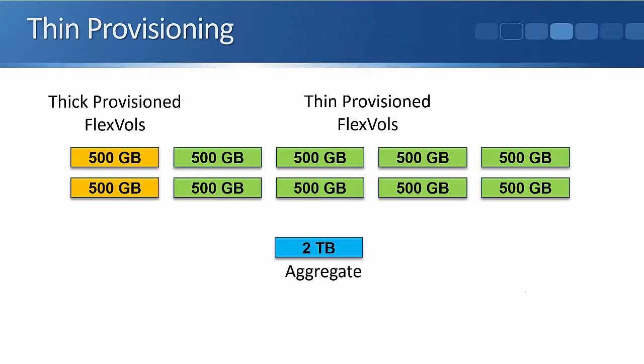Notice that with thin provisioning, it puts more onus on you, the storage administrator, to monitor your capacity usage. The thin provisioned clients will see that they've got 500 gigabytes worth of disk space, but it's possible that we can run out of physical disk space before they actually get there. The users are not going to warn you ahead of time that they're running out of space — you're going to need to monitor this more carefully yourself.